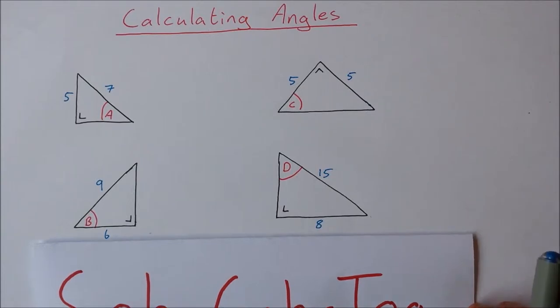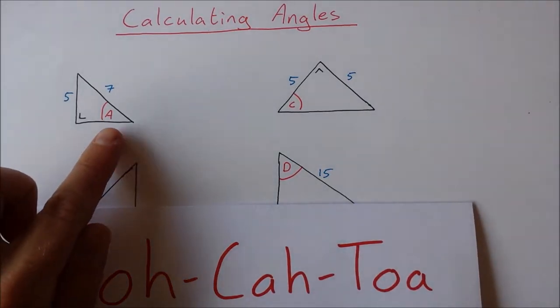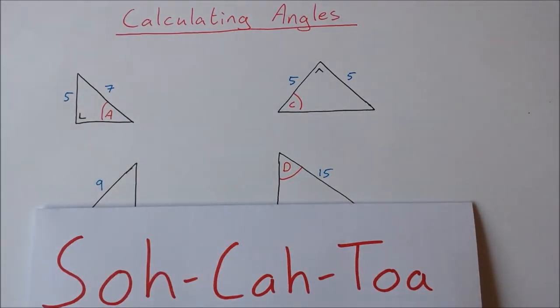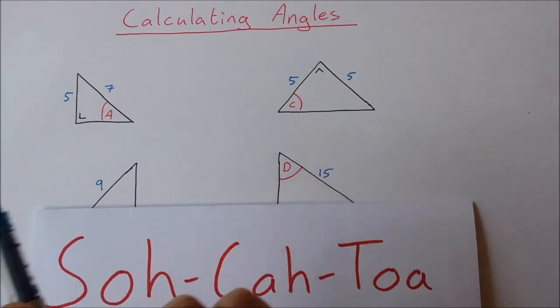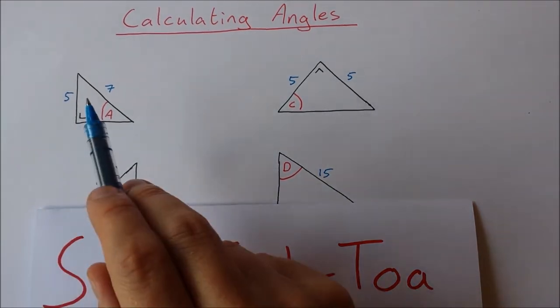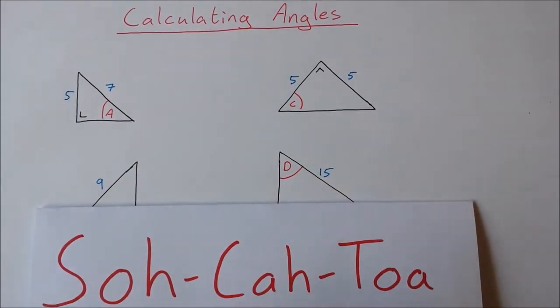So how can we go and find the size of an angle using the information given. We want to find this angle A. How big is it? Now we take a look at the sides that we have. We have the opposite side and we have the hypotenuse.